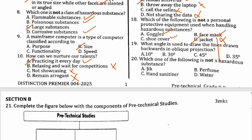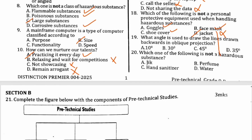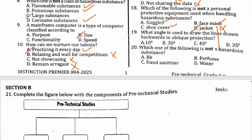Number nineteen: what angle is used to draw the receding lines in oblique projection? The angle between the line and the receding line in oblique projection is always 45 degrees, so therefore the answer is C.